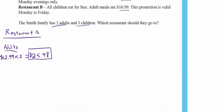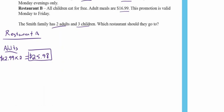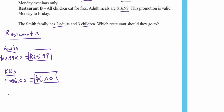For Restaurant A on a Monday evening: two adult meals at $12.99 each equals $25.98. For the three kids, two eat free — so only one extra kid's meal at $6. Kids total: $6. Restaurant A grand total: $25.98 plus $6.00 equals $31.98.